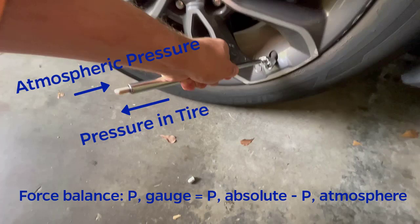If we performed a force balance on this situation, we would define the outward direction to be positive, and say that the reading of the tire pressure gauge, also known as the gauge pressure, is equal to the true pressure inside the tire, also known as the absolute pressure, minus the atmospheric pressure.